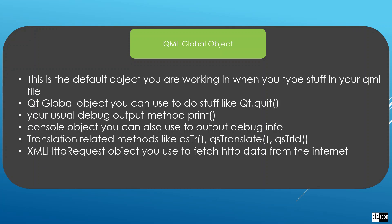The QML global object is the default object you fall into when you start to write your QML code. In your QML file you can type things like console.print — that's the global object you are in. It contains the Qt global object we've seen, with methods like Qt.createComponent. It also contains print for debug messages, the console object we've used with console.log, translation-related methods, and an XMLHttpRequest object we'll use later to fetch HTTP data from the internet.